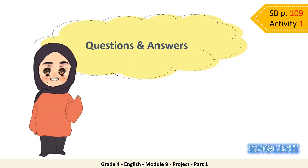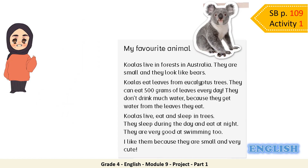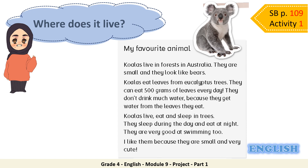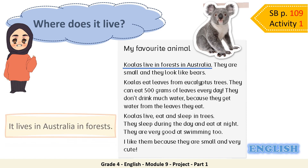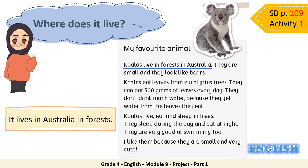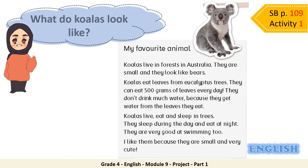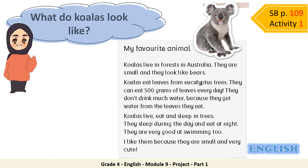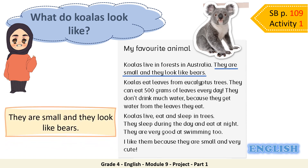Now it's time for some questions and answers related to the text. As you noticed, the text is mainly about the animal koala. Listen to my questions and answer. Where does it live? Look at the text — the answer is here. You would say: it lives in Australia, in forests. What do koalas look like? Look for the answer — it's in the text. They are small and they look like bears. Good job!